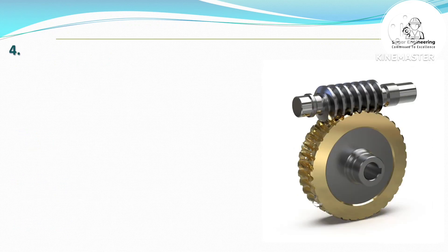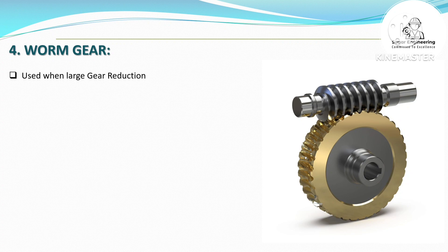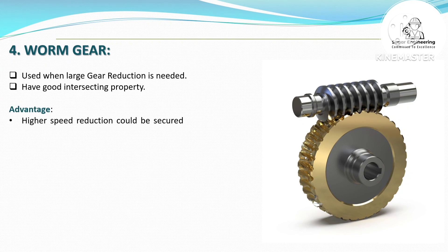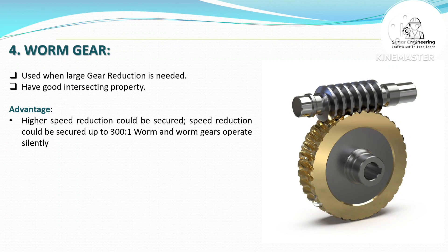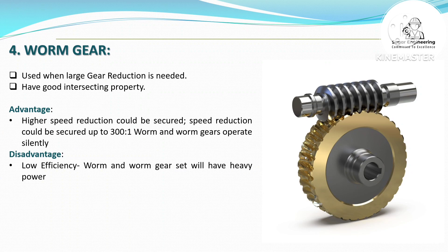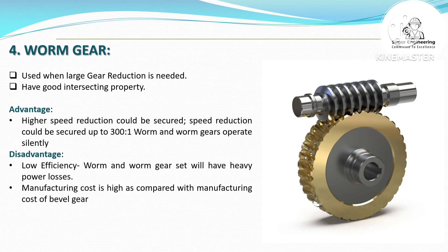Worm Gear — used when large gear reduction is needed. Has good intersecting properties. Advantage: higher speed reduction can be secured, up to 300:1, and worm and worm gears operate silently.